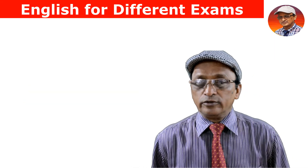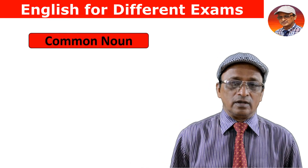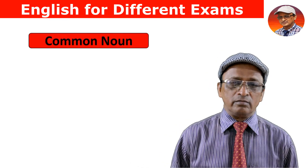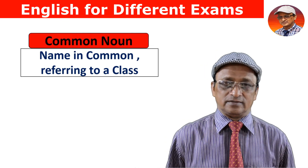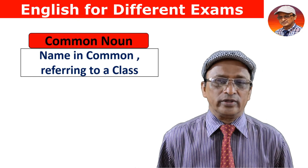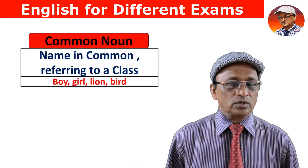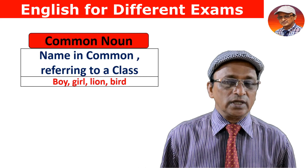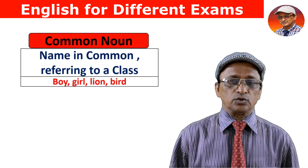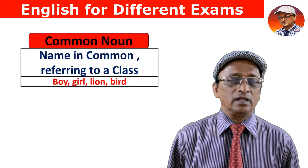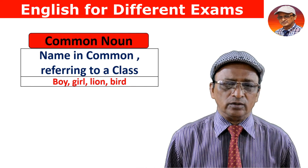The second category is common noun. A common noun is a name in common, referring to a class. For example, 'boy' refers to all the boys, and 'girl' refers to all the girls. So boy, girl, lion, bird — all these are common nouns.